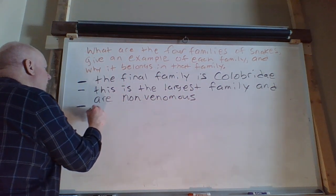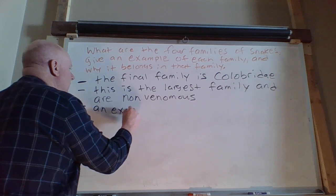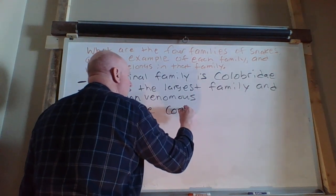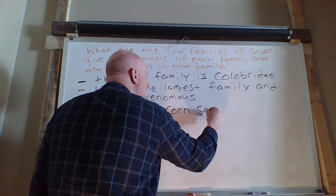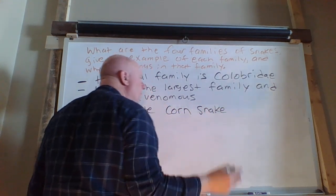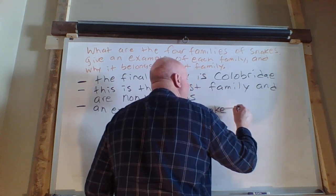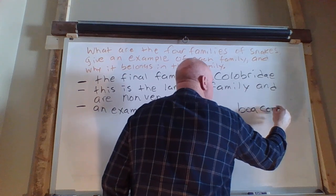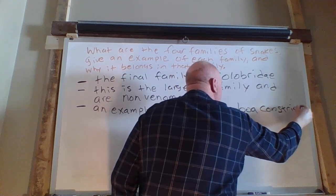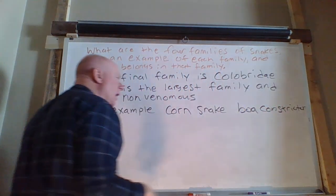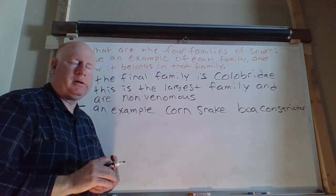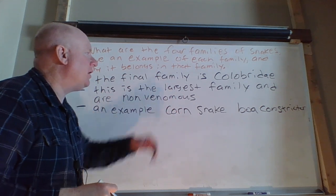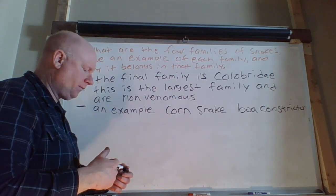An example, we could say corn snake. You could go even bigger. You could say a boa constrictor, anaconda, python. Any one of those are ones that you could put in this family of snakes because they are non-venomous.